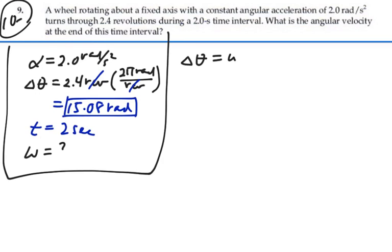In other words, angular displacement is equal to the final angular velocity times time minus 1 half angular acceleration times time squared. Let's use this to solve for that final angular velocity. Add a 1 half alpha t squared to both sides and divide by t. So omega is going to equal delta theta plus 1 half alpha t squared divided by t.